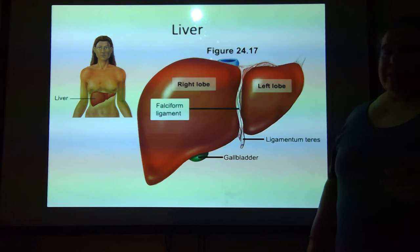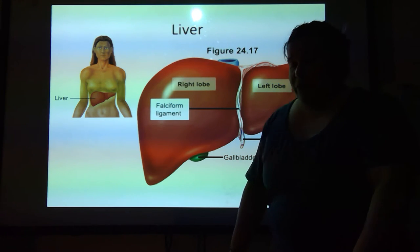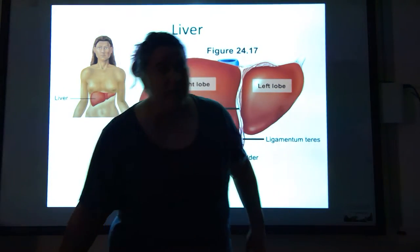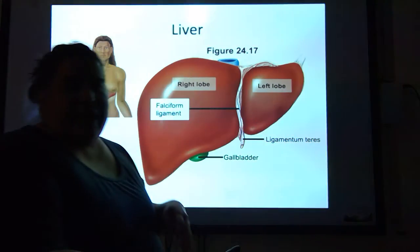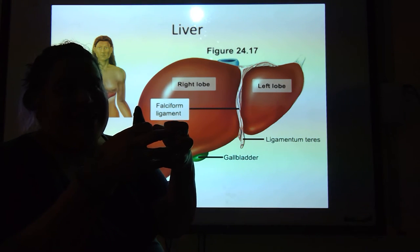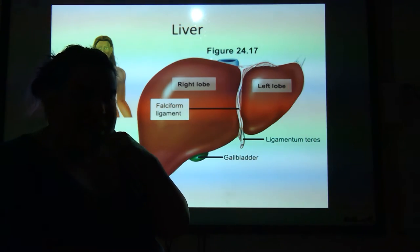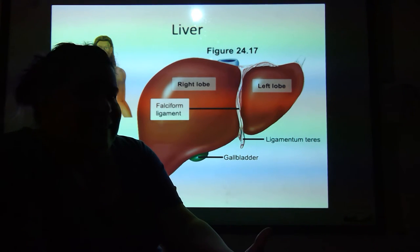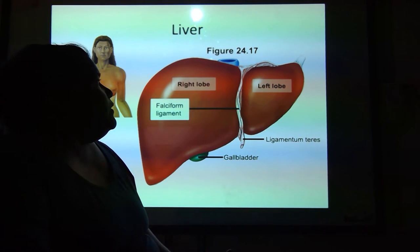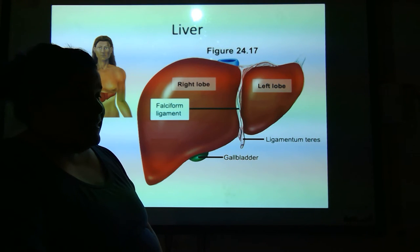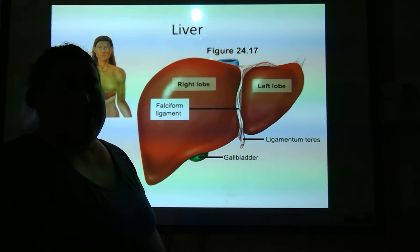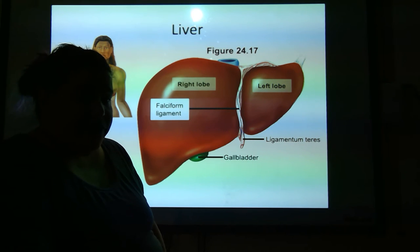Speaking of accessory organs, we've got the liver. The liver actually creates or makes bile. Bile emulsifies fats, meaning that it takes big fat globules and makes them into smaller fat globules. It's not that it breaks it down enzymatically — it's literally just separating it into smaller pieces. Since it injects that bile into the beginning of the small intestine, it's considered an accessory organ.